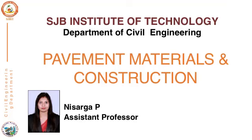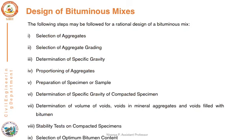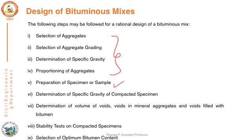In this session, we will see the procedure for bituminous mix design using the Marshall Stability method. The design of bituminous mixes involves the following steps: selection of aggregates, aggregate gradation as per requirements, determination of specific gravity of various aggregates, and proportioning to meet MRT specification. In this session, we will see how the bituminous mix sample will be prepared using the Marshall Stability method, and how the various volumetrics are determined.